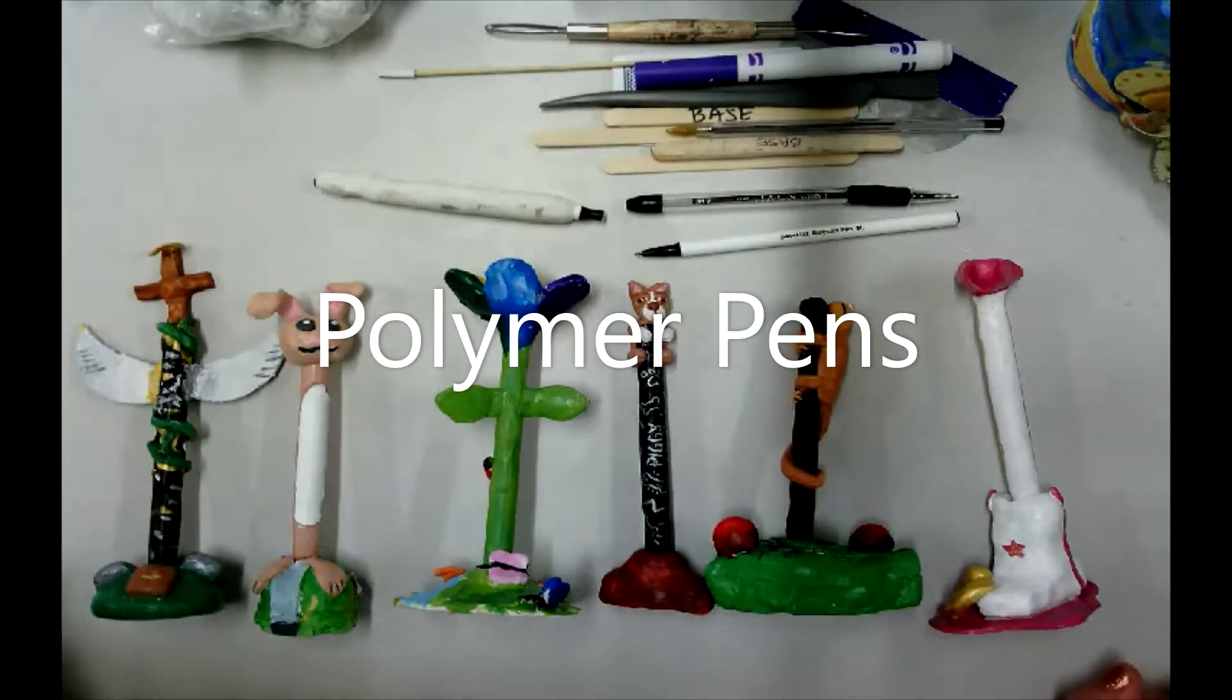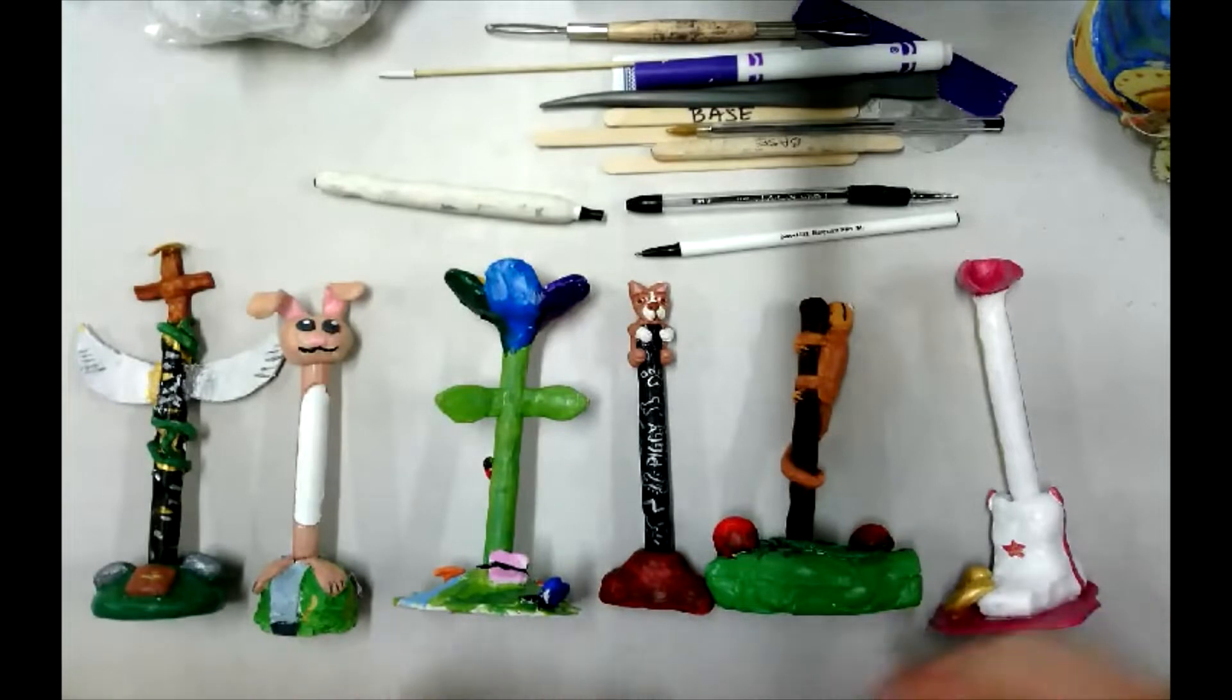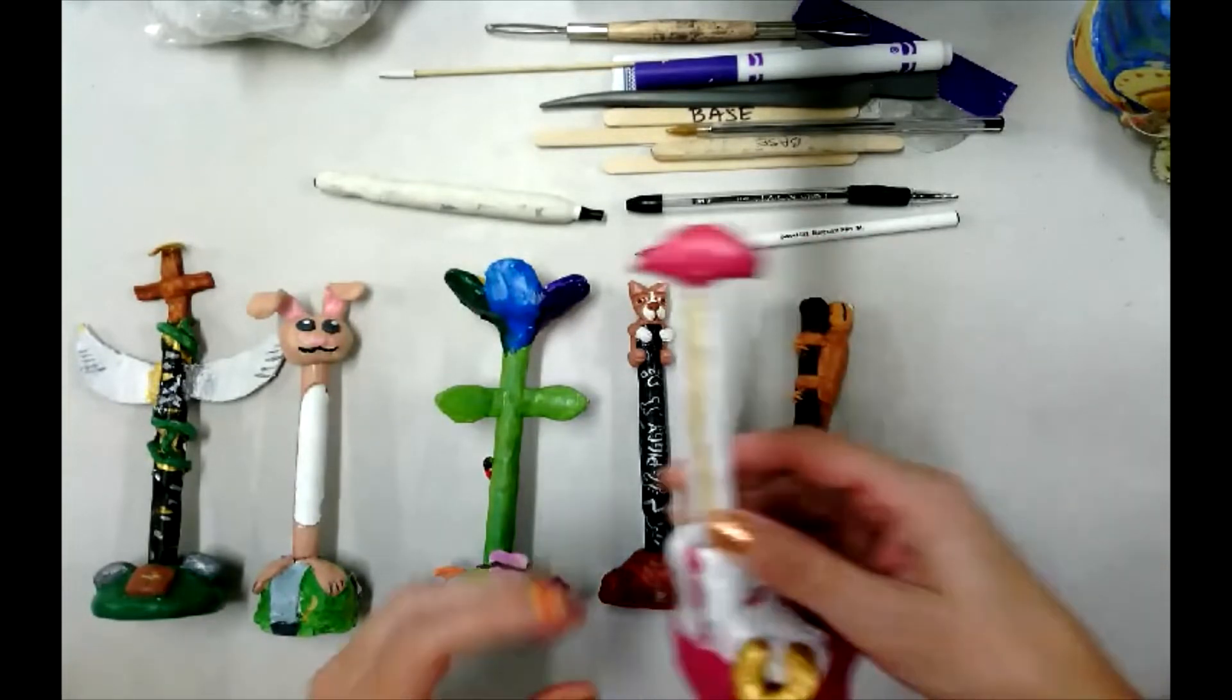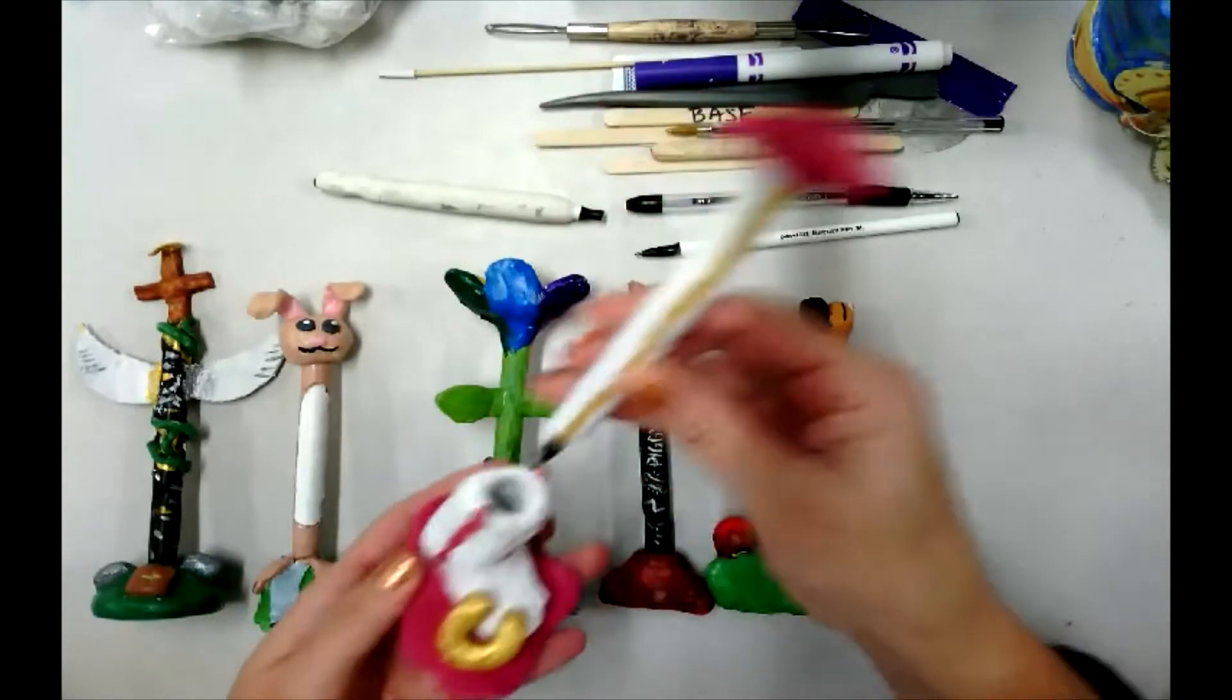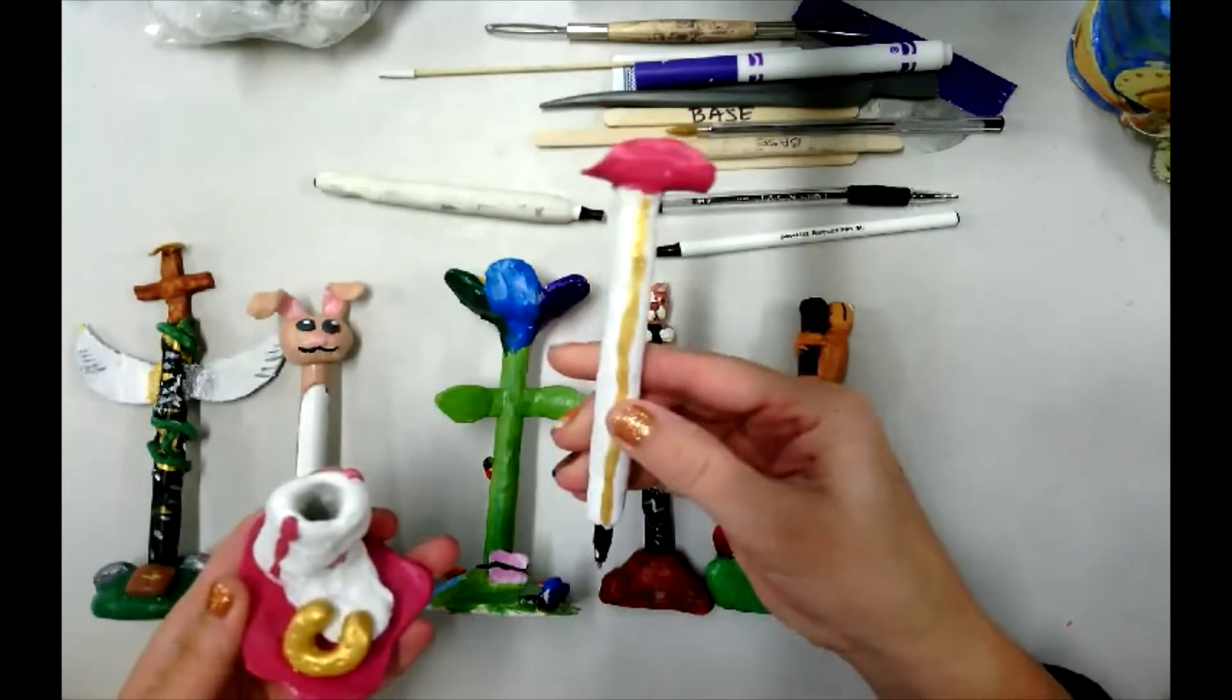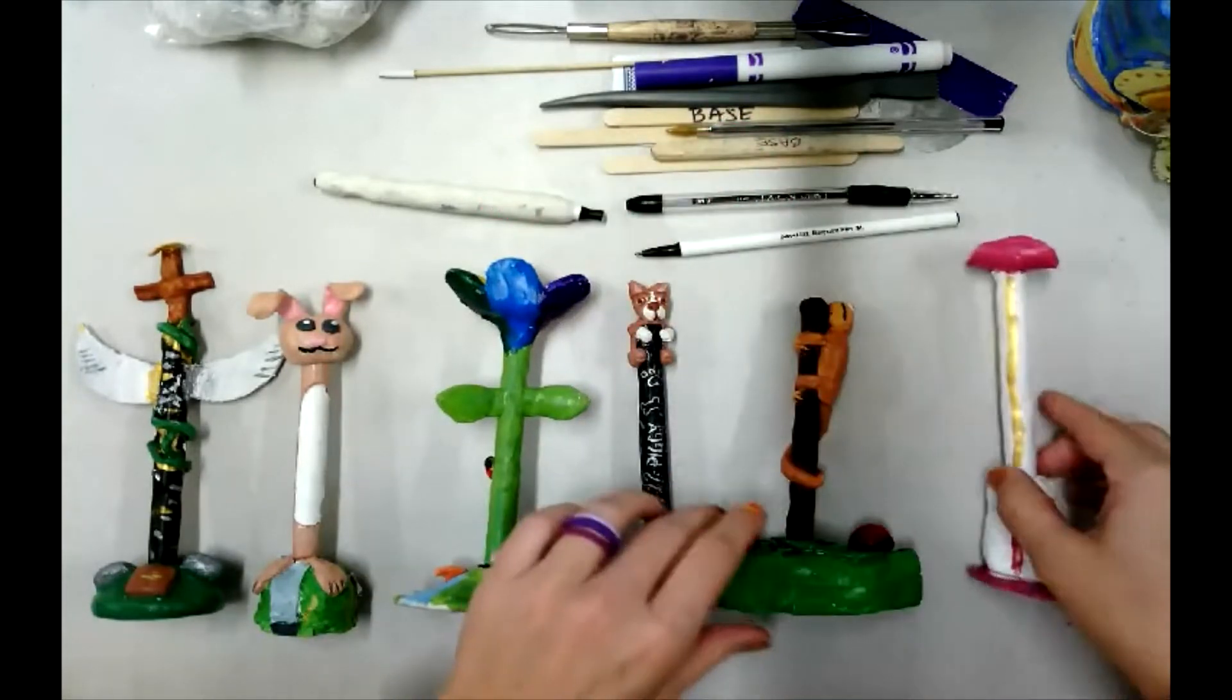Okay, these are examples of some of the polymer sculpted pens that my sixth graders created. They had to come up with a theme for their project. It was totally their choice what they wanted to work with. But they had to put clay around the body of a pen and create a base to hold their pen.